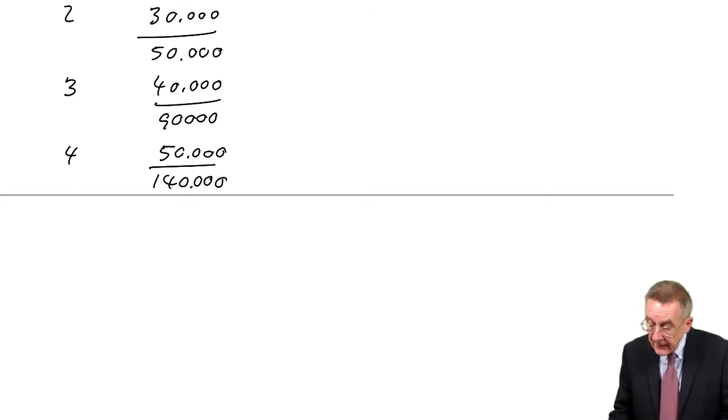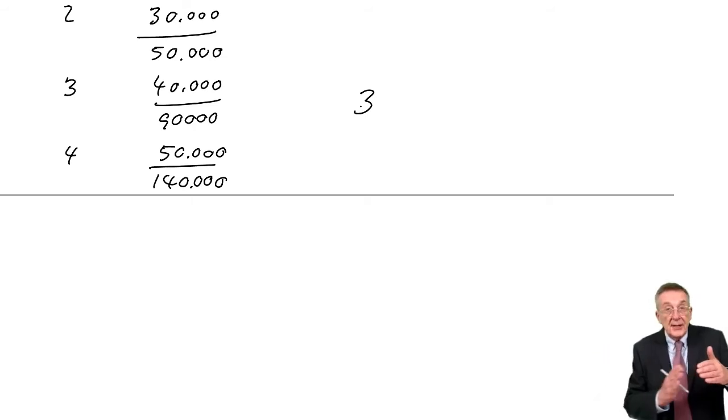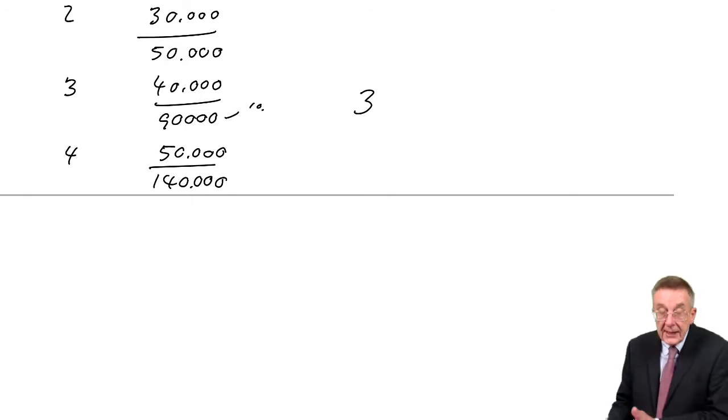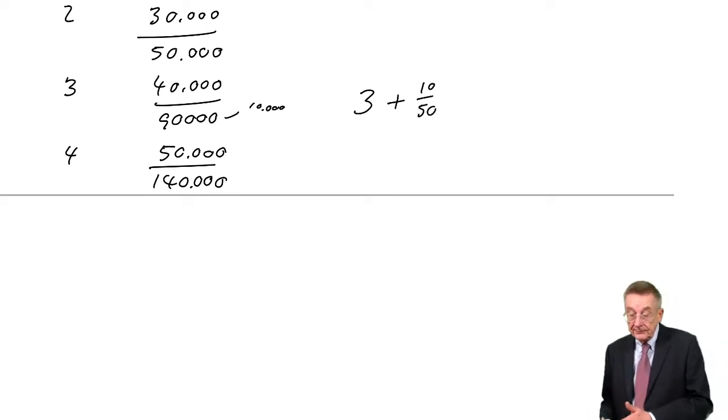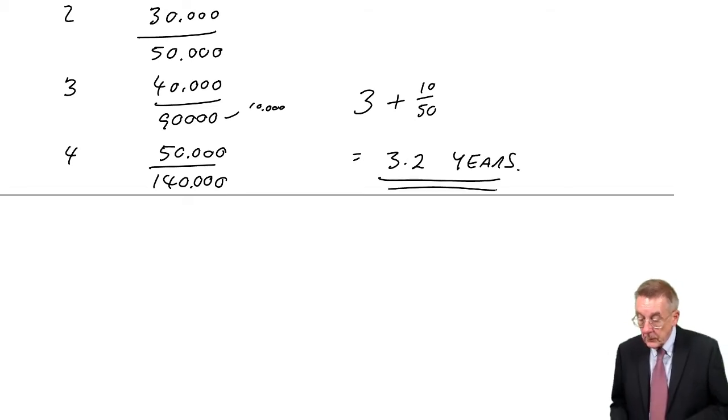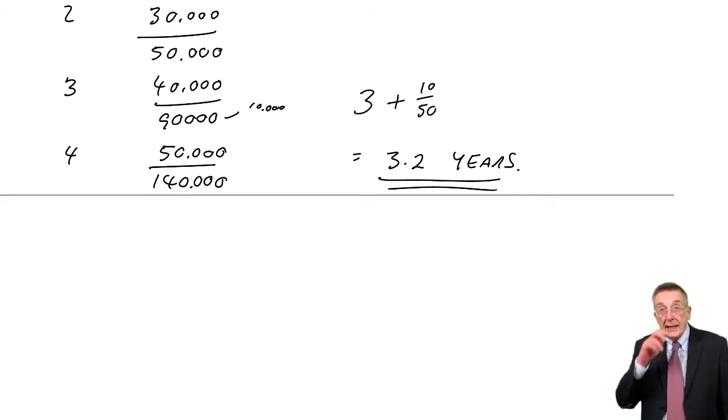So how long is it going to take? After three years, we've had back 90, and we need another 10 to get the full hundred. The fourth year gives us 50. If that 50 is received evenly throughout the fourth year, surely to get the extra 10 we need to get 100, we need an extra 10,000. If the fourth year gives us 50,000, 10,000 will be 10/50ths of the fourth year, which is 0.2. It will be 3.2 years.